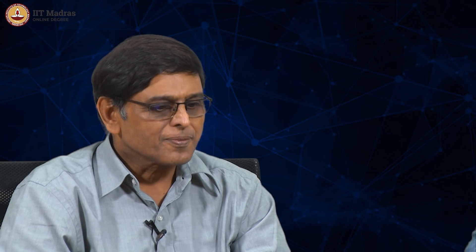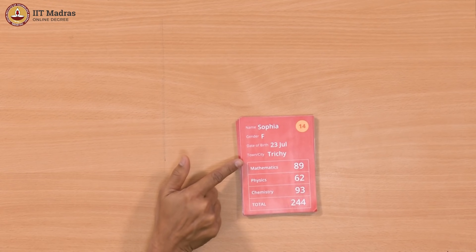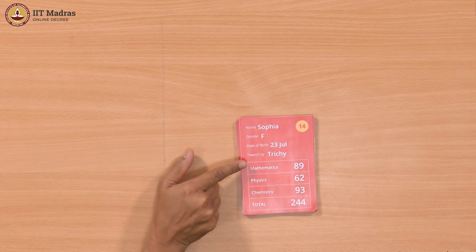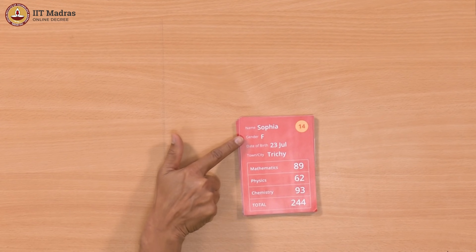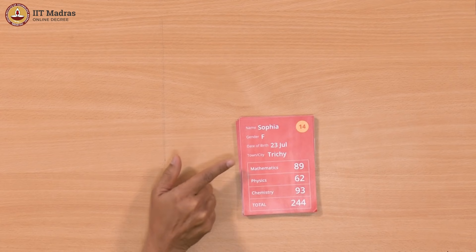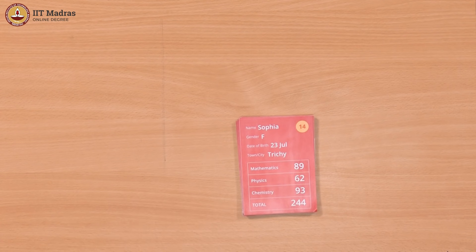How many girls are from Chennai? How many Chennai girls are in this data set? There are two fields involved: gender and town/city. What we want is gender should be female and the town/city should be Chennai. How would we do that?